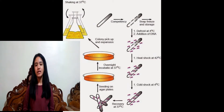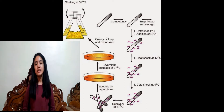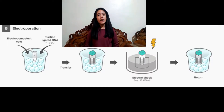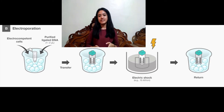In transformation, we have the two most popular methods which are heat shock and electroporation. In heat shock, the DNA plasmid mixed with the competent cell is being exposed briefly to an elevated temperature. Whereas in electroporation, we use an electroporator which induces and allows DNA entry into the cell.